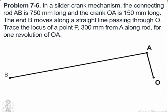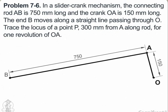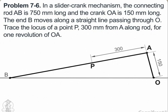In a slider crank mechanism, the connecting rod AB is 750 mm long and the crank OA is 150 mm long. The end B moves along a straight line passing through O. Trace the locus of a point P 300 mm from A along the rod for one revolution of OA.